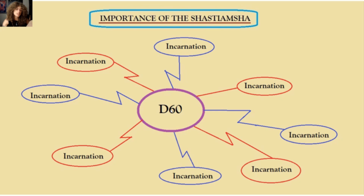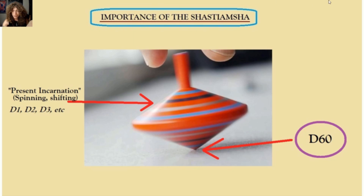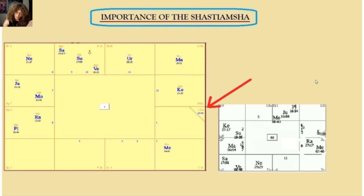If a person has something like Ketu in whatever sign in the D60, this is something they've been doing in past lives for a long time. Sometimes a birth chart can show potentials in this life which open channels to the soul's essence — the D1 is this life, and the D60 is the soul's essence. Sometimes we find the D1 Rashi has an open channel for the potentials of the D60's soul essence. For example, a Leo rising with the Sun exalted in Aries in the ninth house, with Rahu in Leo in the D60 chart, shows an open channel for that soul desire.